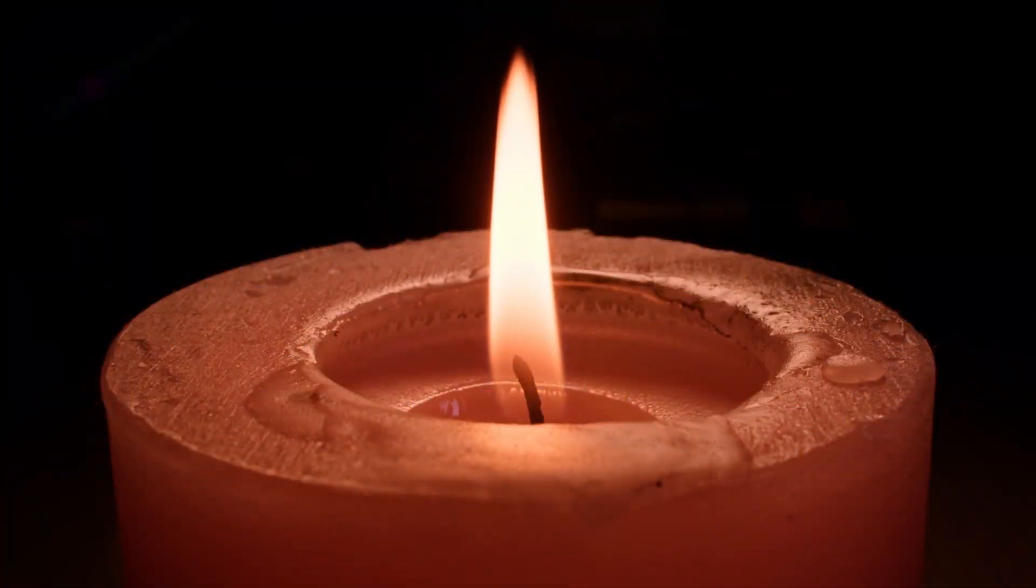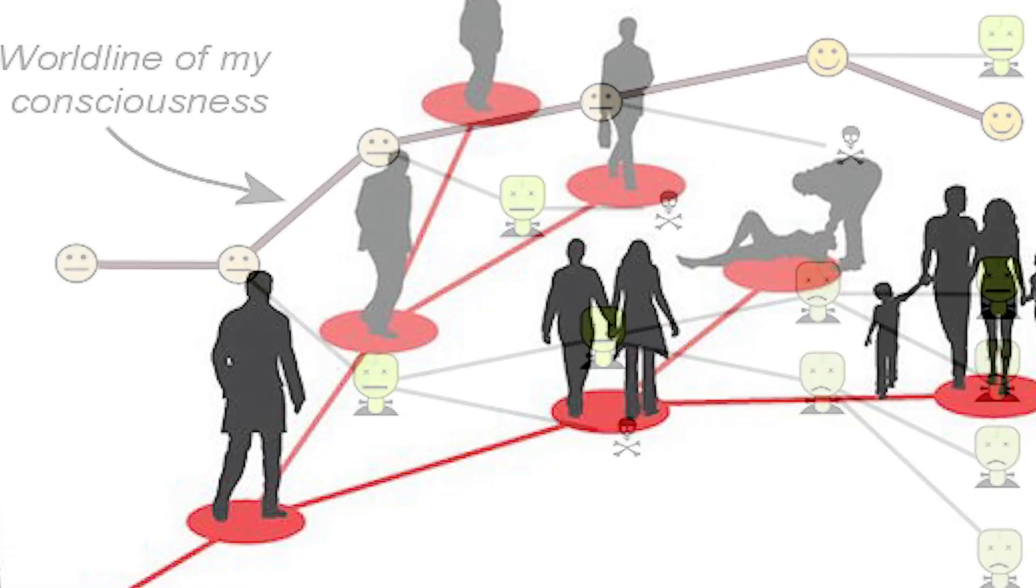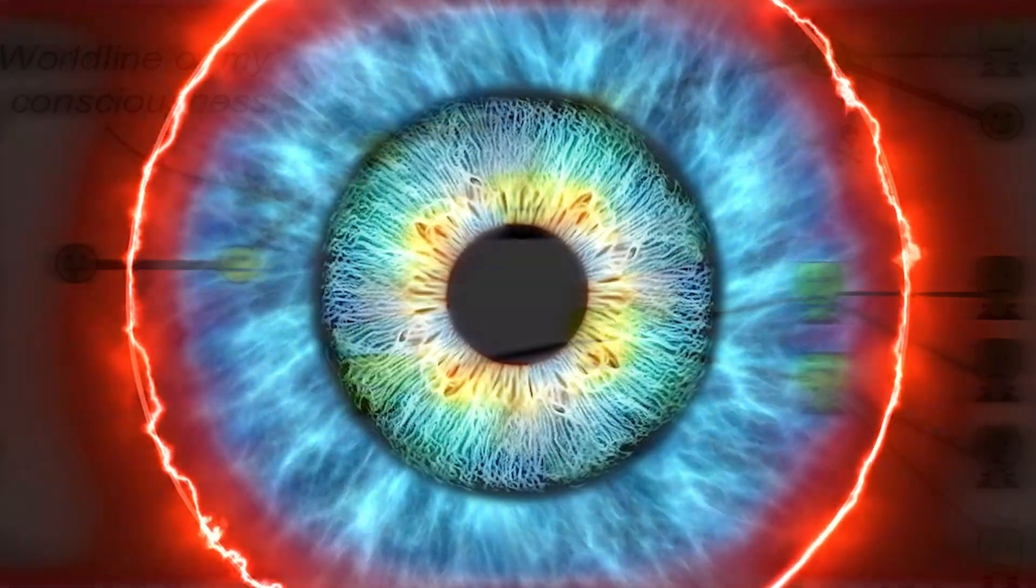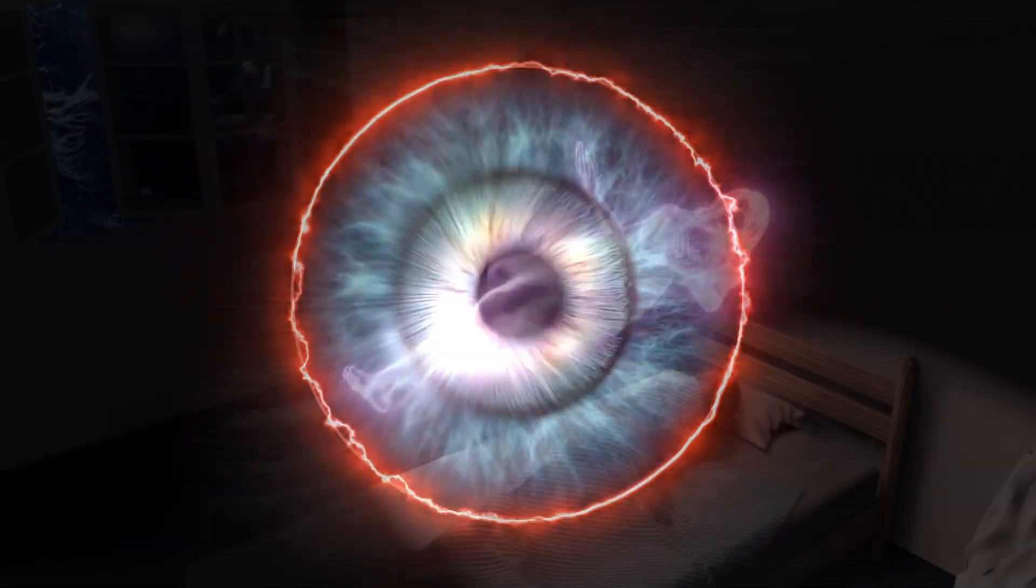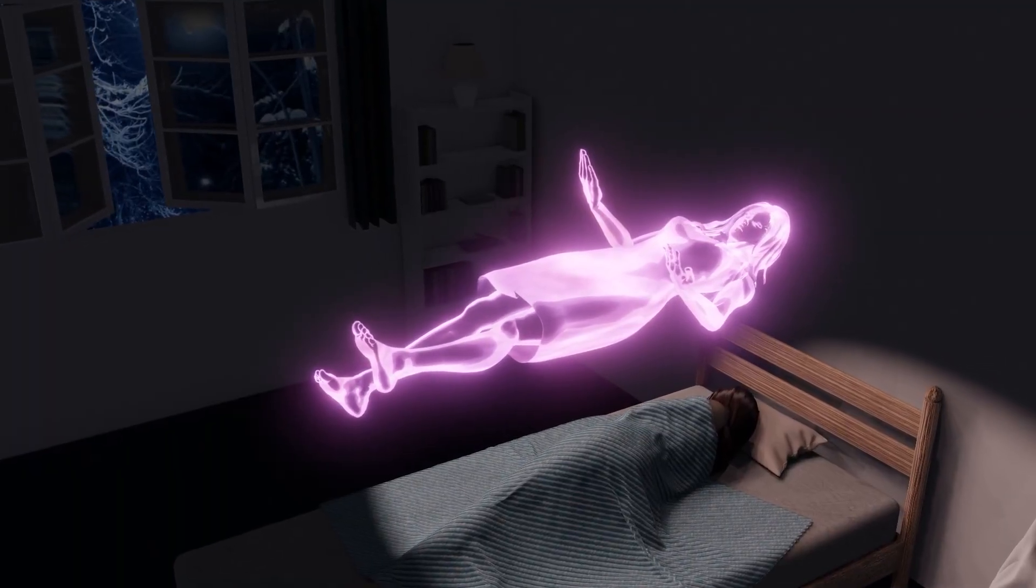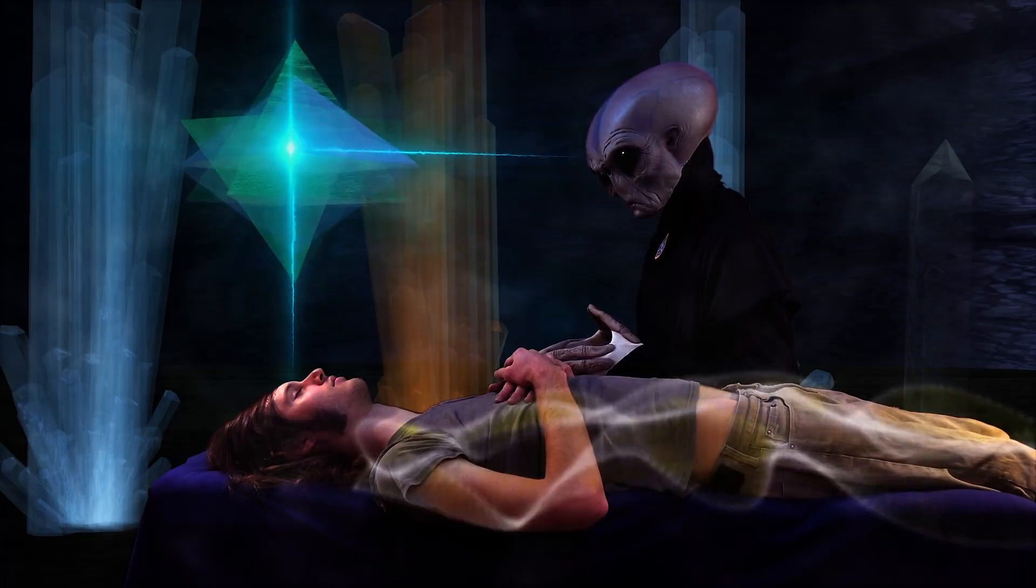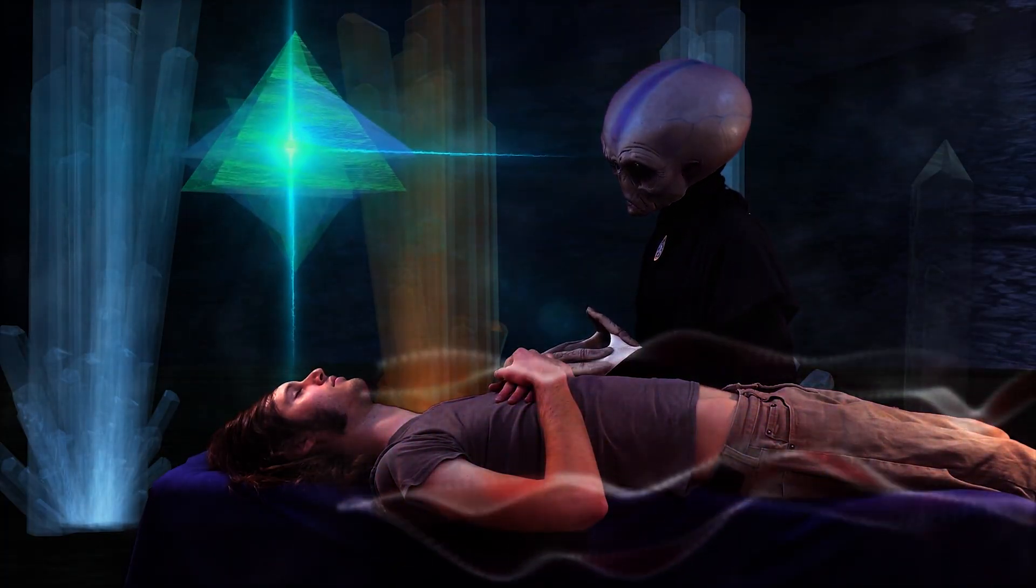Now, let's step briefly into the realm of speculation, a concept called quantum immortality. Imagine two branches of reality. In one, you die in a car accident. In the other, you survive. Believers in this idea say your conscious experience continues only in the branches where you survive, meaning you'd never experience your own death. Hugh Everett himself may have believed this privately, though he never published it scientifically. While intriguing, this idea has no experimental support and is considered more philosophical or science fiction than actual physics. Think of it as a modern myth inspired by quantum theory.